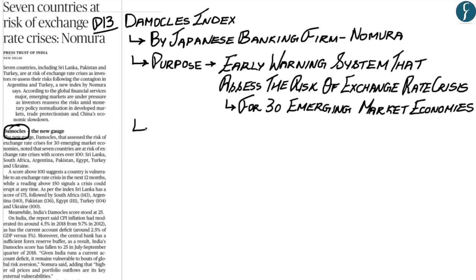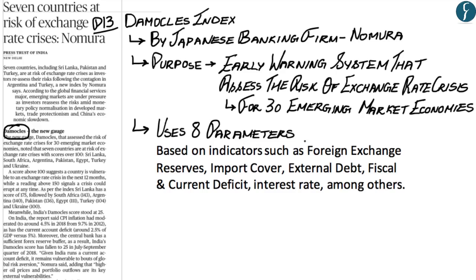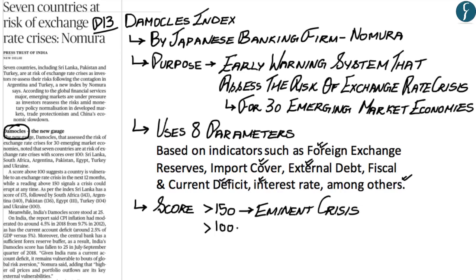The index uses 8 parameters based on indicators such as foreign exchange reserves, import cover, external debt, fiscal and current deficit, and interest rates, among others. If a country's score is more than 150, it signals an imminent exchange rate crisis. If the score is more than 100, it signals vulnerability to a crisis within the next one year.